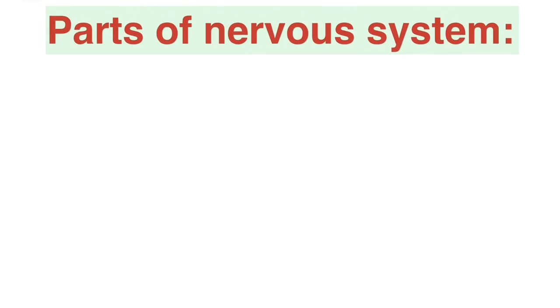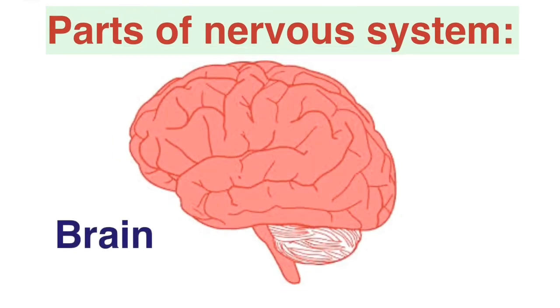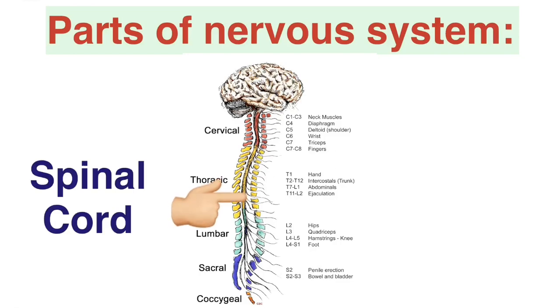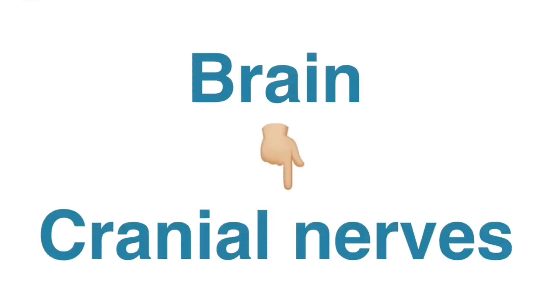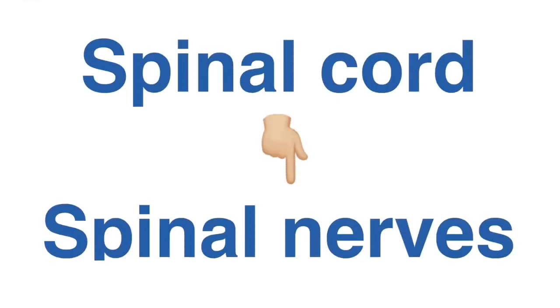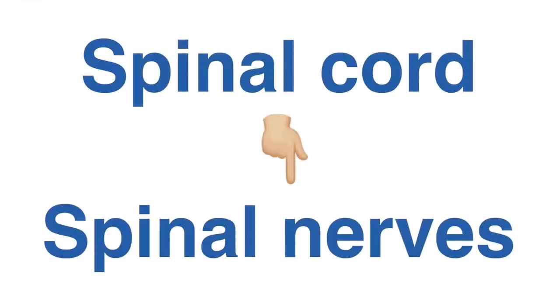The nervous system consists of three parts: number one, brain; number two, spinal cord; and number three, nerves that originate from the brain and spinal cord. The nerves that originate from the brain are called cranial nerves, whereas the nerves which originate from the spinal cord are called spinal nerves.